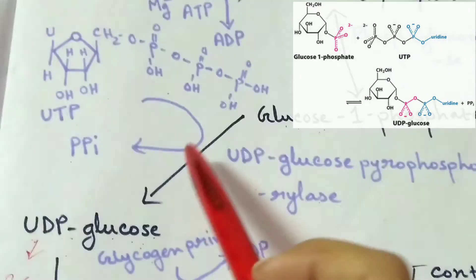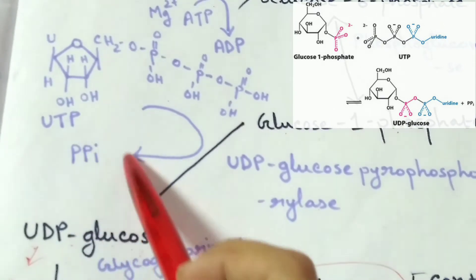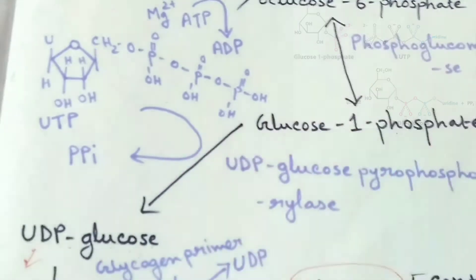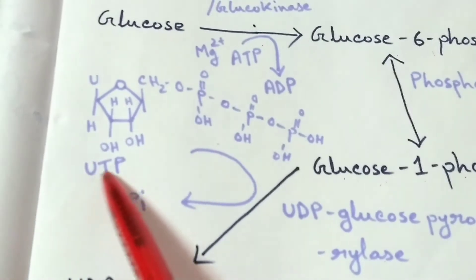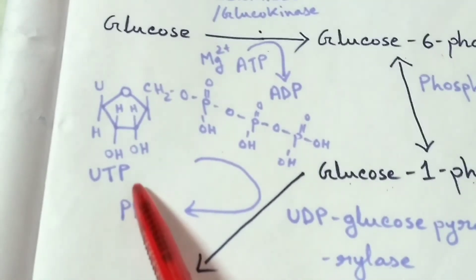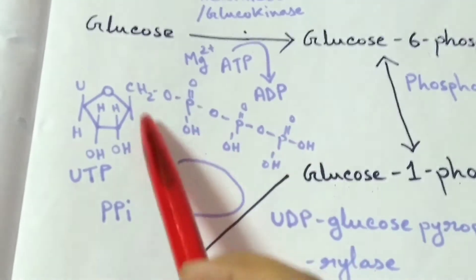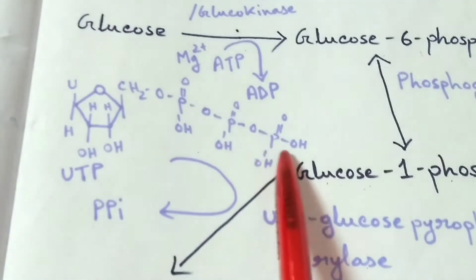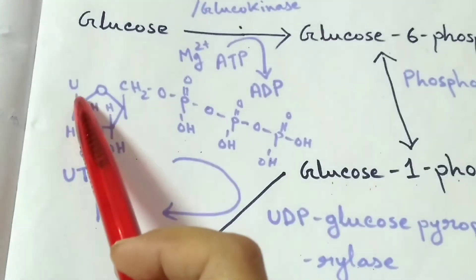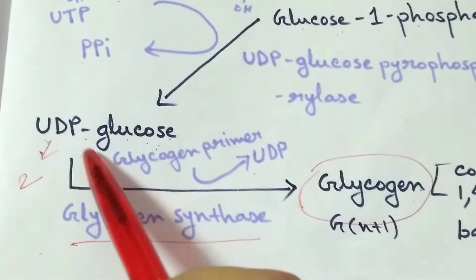In this step, two molecules of inorganic phosphate are released. Here is the structure of uridine triphosphate, which is a pentose sugar containing triphosphate positions 1, 2, 3, and here is the uridine nitrogen base.